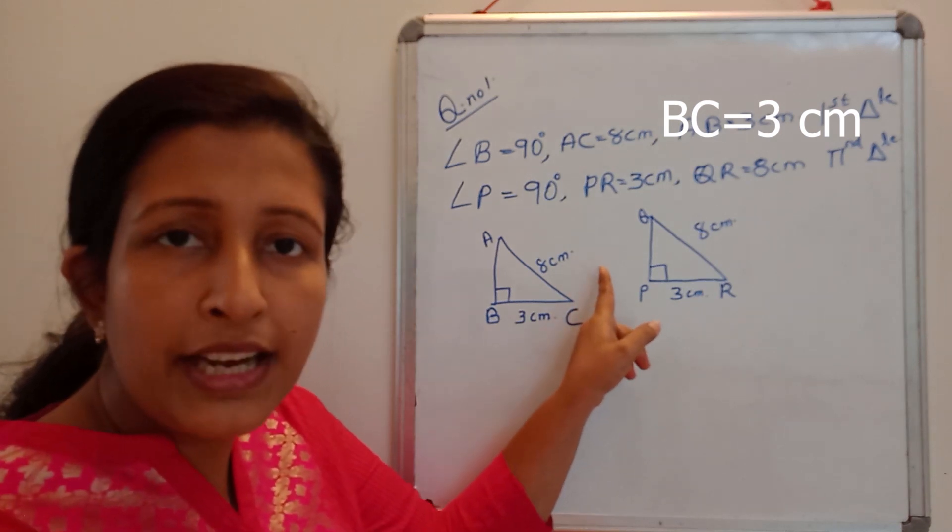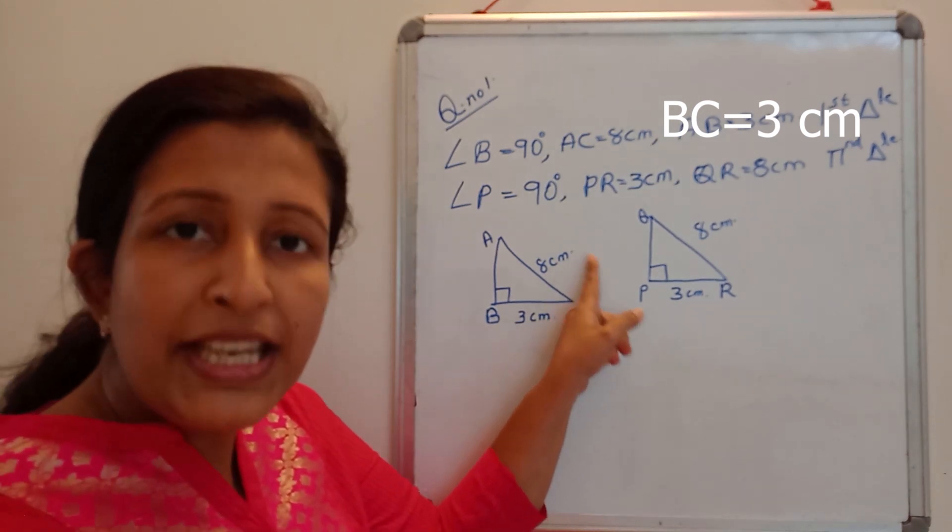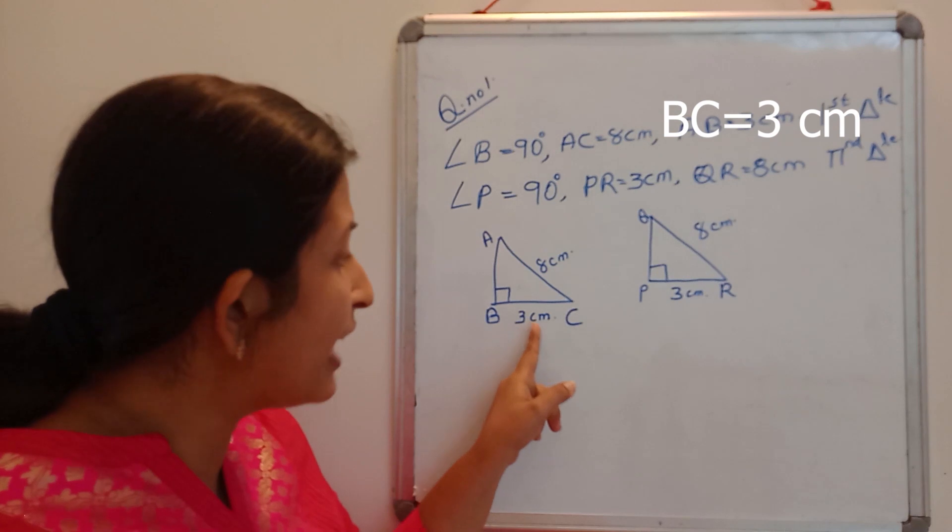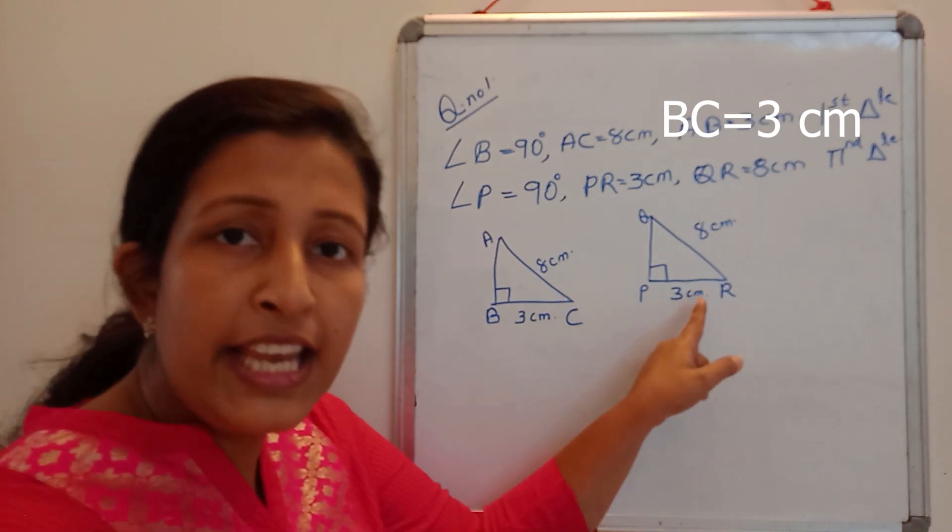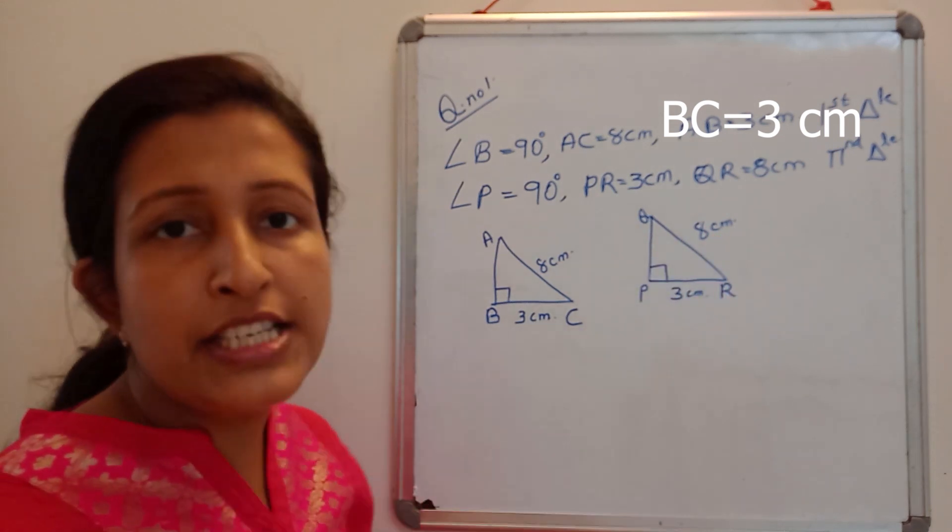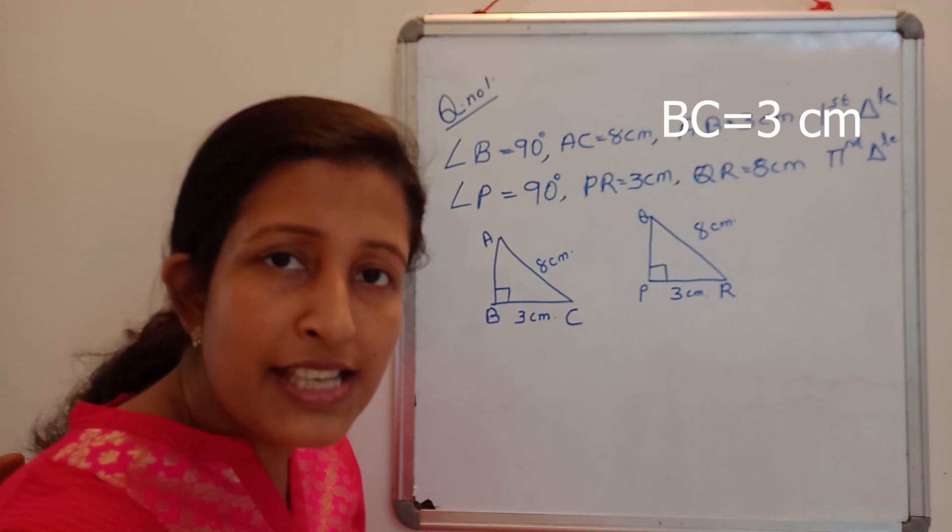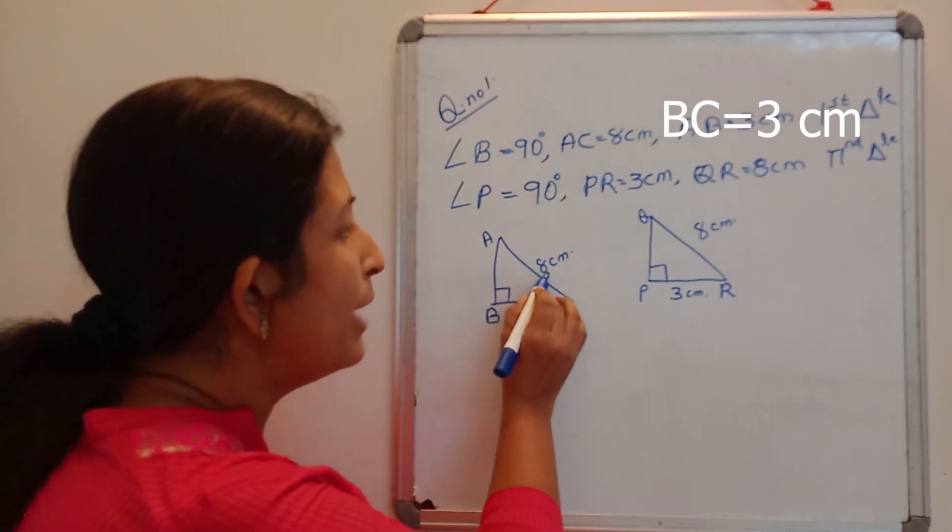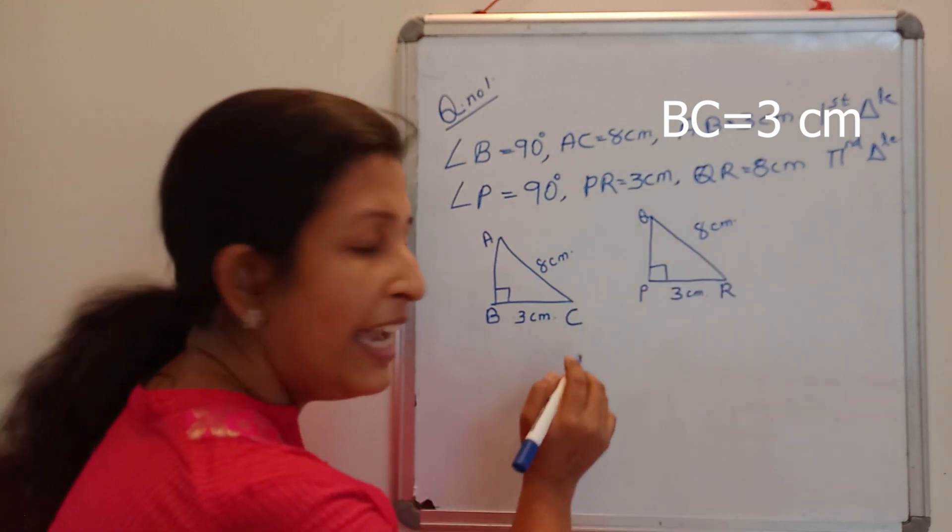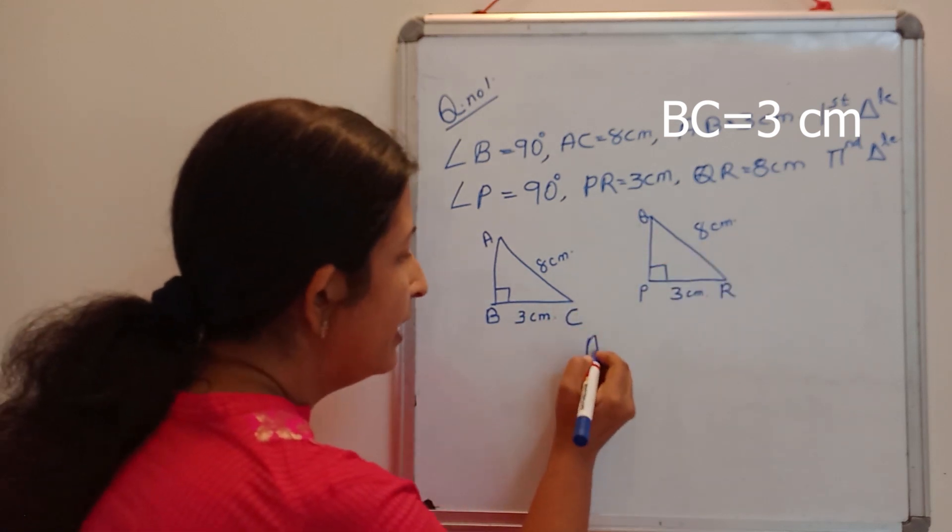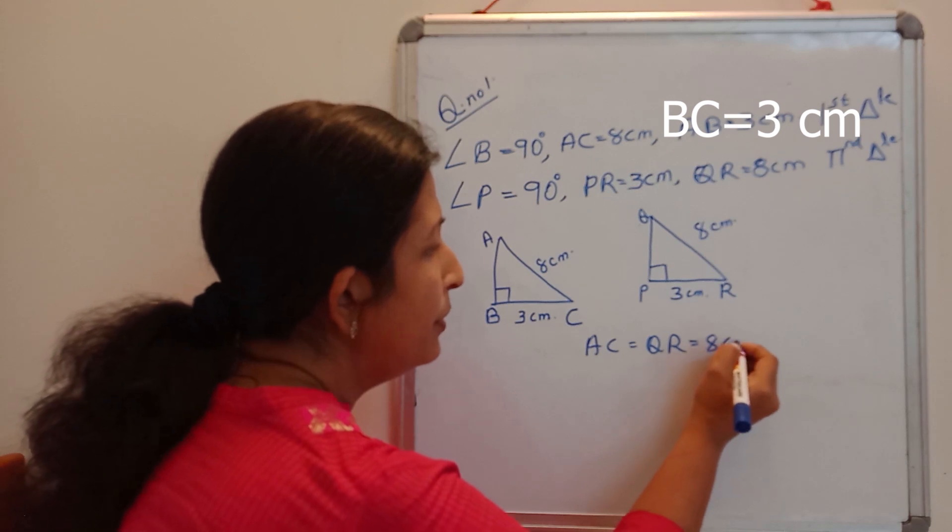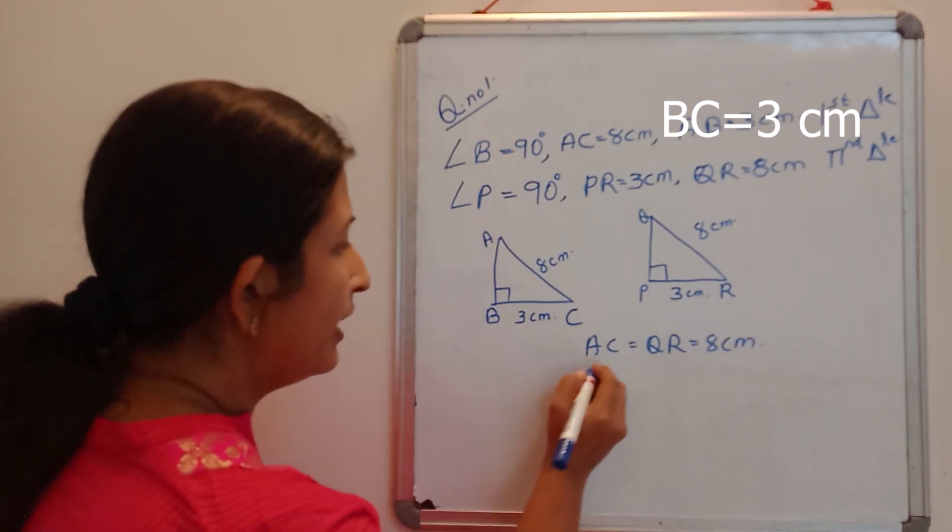By the theorem, by the criteria, if the hypotenuse and one side of one right-angled triangle is equal to one side and hypotenuse of another right-angled triangle, we can say that these two triangles are congruent. So here hypotenuse AC and QR are 8 cm. AC equal to QR equal to 8 cm. Angle